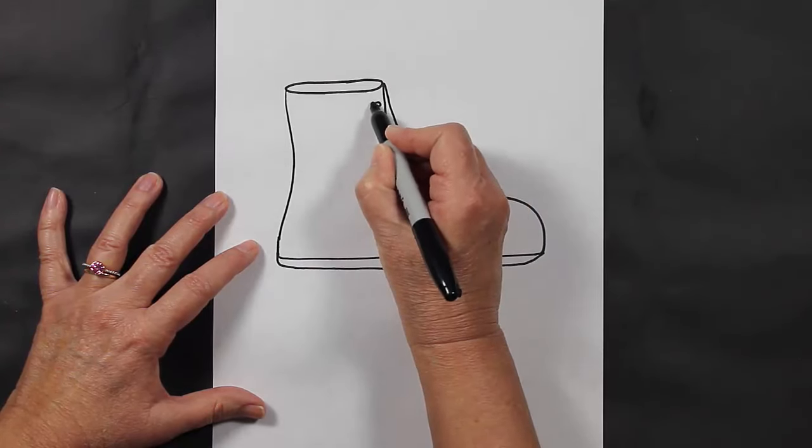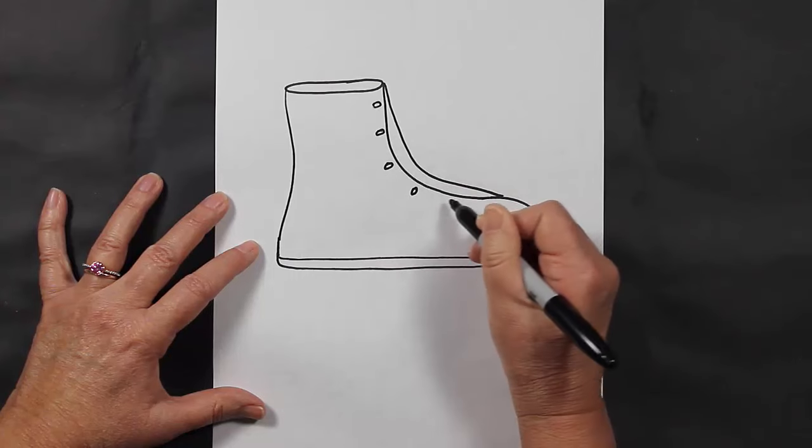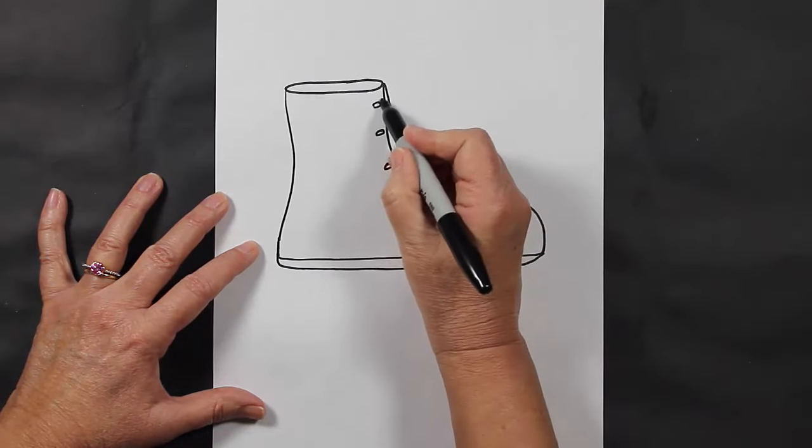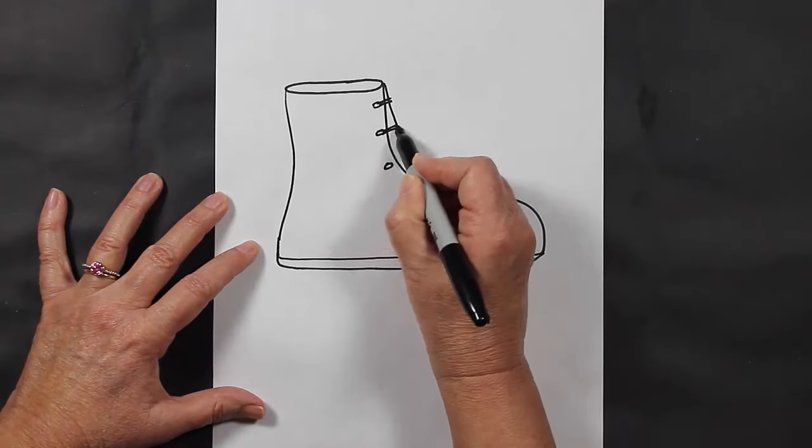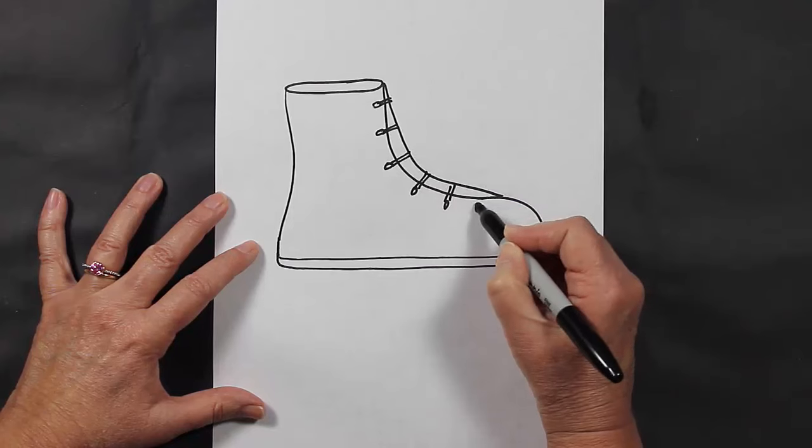So we need to have our little holes for our laces first, and then our laces go across just like that.